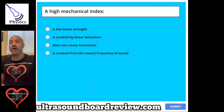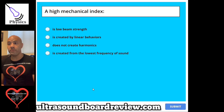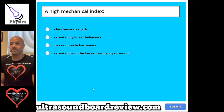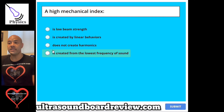Question 92. A high mechanical index: A, is low beam strength. B, is created by linear behaviors. C, does not create harmonics. Or D, is created from the lowest frequency of sound. The answer is D, is created from the lowest frequency of sound.